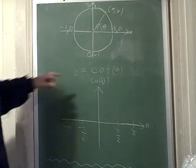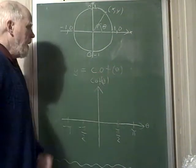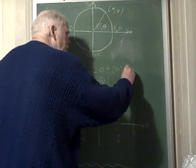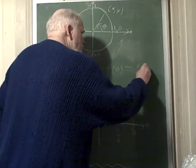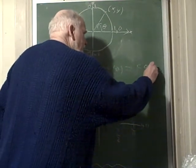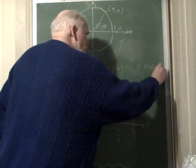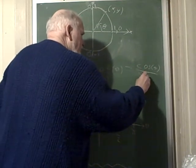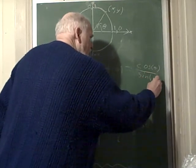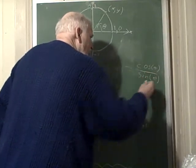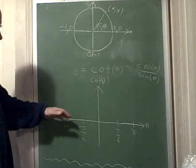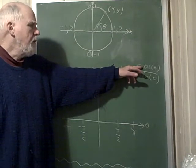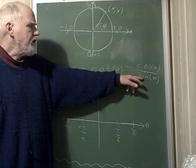We're going to graph the cotangent of theta. The cotangent of theta is really the cosine of theta over the sine of theta — just like with the tangent, we found it as a fraction.